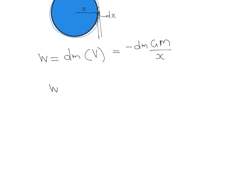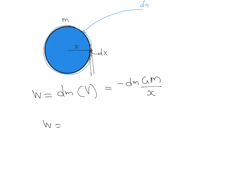Instead of dm we can write density into the volume of the small part added. The volume of this thin shell is the surface area times the thickness, which is 4πx² times dx. So dm equals ρ × 4πx² × dx, where ρ is the density of the sphere.